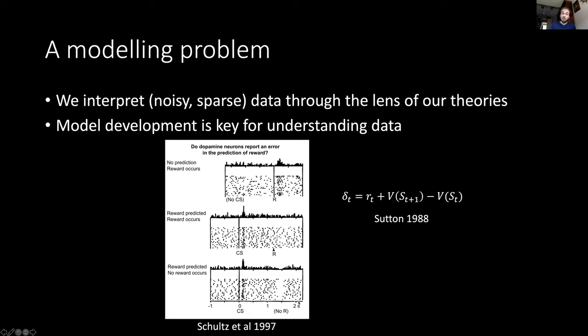The idea was that these neurons increase their firing rates when an unexpected reward occurred, and they decreased their firing rates when there was an unexpected omission of a reward. But more importantly, these firing rates also increased in response to a state transition—a transition from an unrewarding state to a rewarding state.